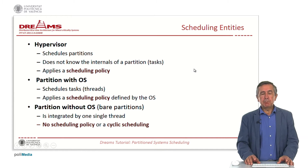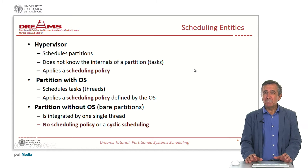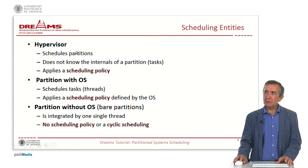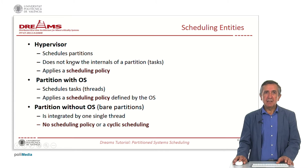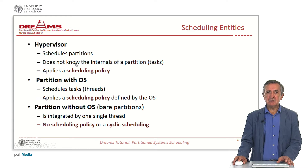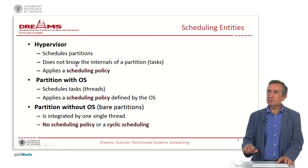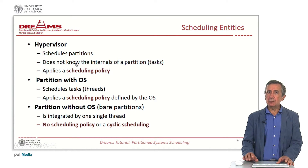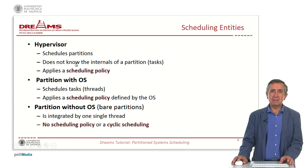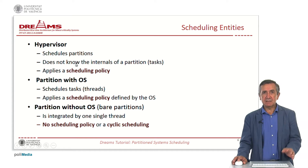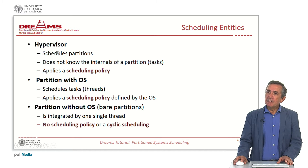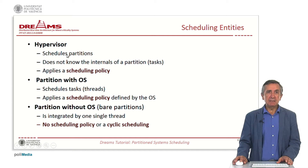From the scheduling perspective, we discuss which entities are handled by each level. The hypervisor schedules partitions. A partition for the hypervisor is like some code with an entry point. One key feature is that the hypervisor does not know the internals of the partition — it doesn't know if there is an operating system, tasks, or threads inside.